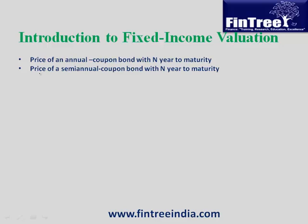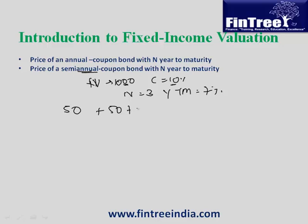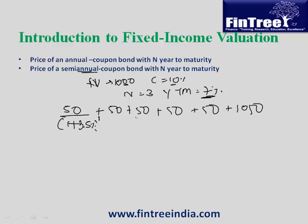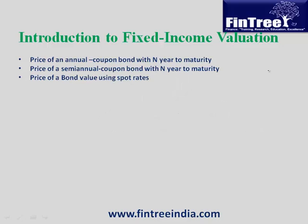For a semi-annual coupon bond with face value 1000, coupon 10%, maturity 3 years, and YTM 7%: the semi-annual cash flow is 50, so we have 6 payments of 50 plus 1000 at maturity, discounted at 3.5%. On the calculator: 2nd clear TVM, 50 payment, 1000 future value, 6 N, 3.5 IY, compute present value — result is 1079.